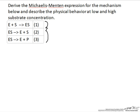We will write the rate expression for each of these steps based on the molecularity. We're interested most often in the rate of formation of our product P, so we'll write out the expression for that rate of formation of our product. It's just equal to some rate constant times the concentration of the enzyme-substrate complex.